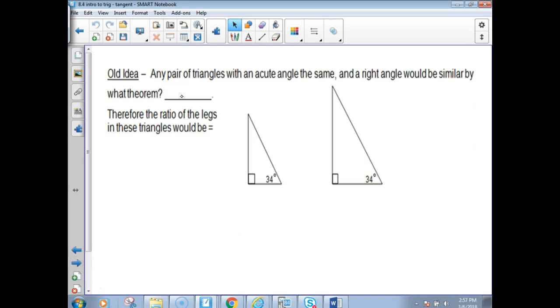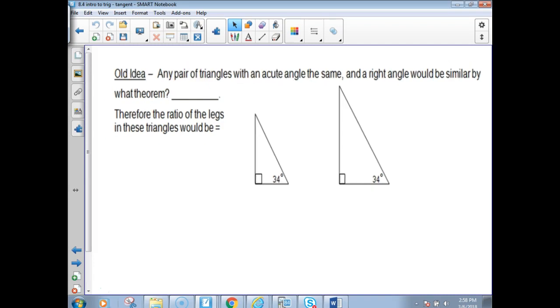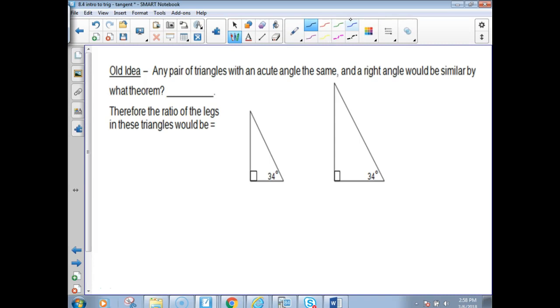Alright, the old idea is any pair of triangles, we've already talked about similar triangles, any pair of triangles with an acute angle are the same. Wait, no, they're not the same. Any pair of triangles with an acute angle that is the same and a right angle would be similar by angle and angle, which is that AA similar theorem. Therefore, the ratio of the legs in these triangles would be equal. So if you compared this to this and this to this, they would be equal.